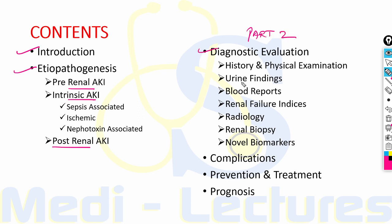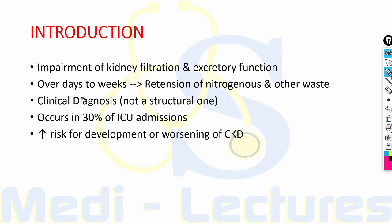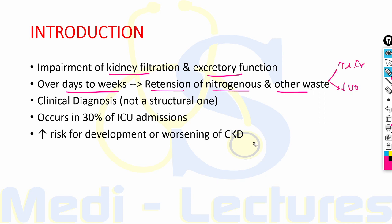Acute kidney injury is defined by the impairment of kidney filtration and excretory function occurring over days to weeks, resulting in retention of nitrogenous and other waste normally cleared by the kidney. It is usually associated with increase in serum creatinine and often associated with decrease in urine output. AKI is not a single disease but a heterogeneous group of conditions that share common diagnostic features.